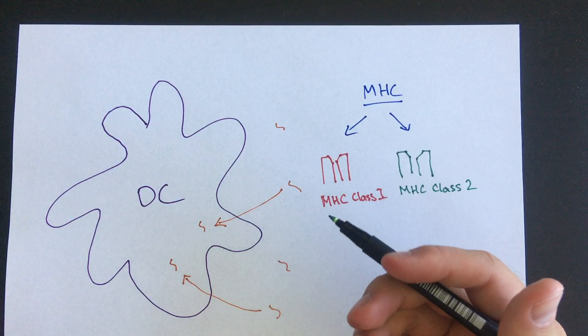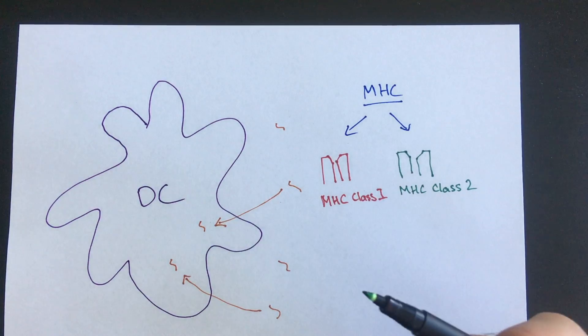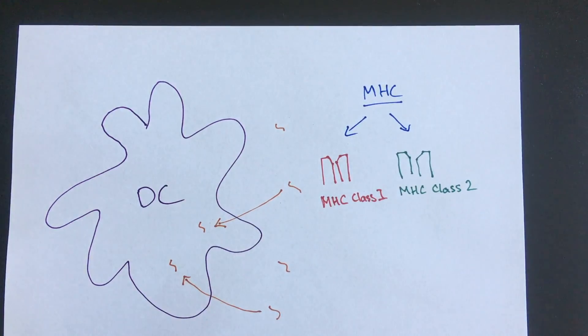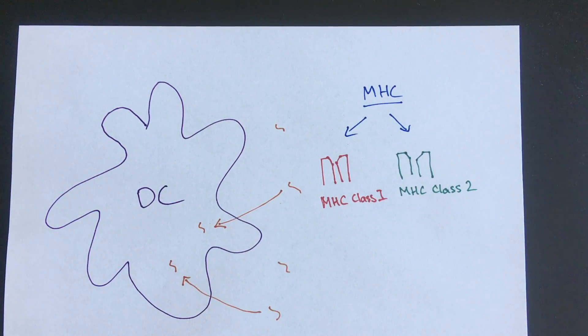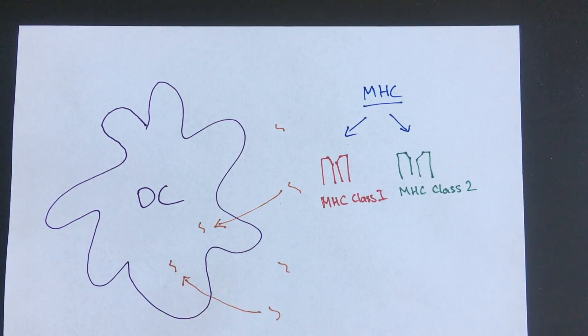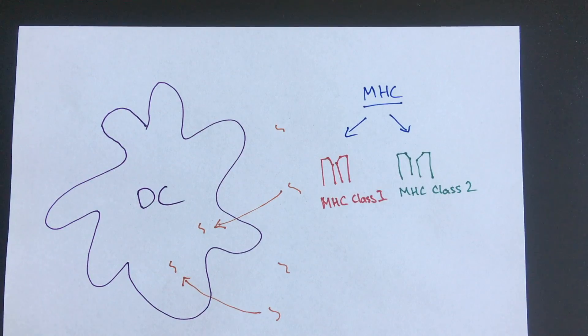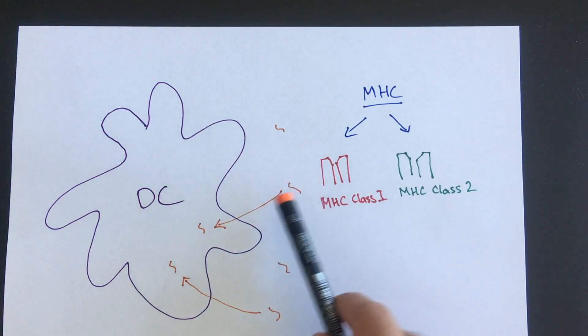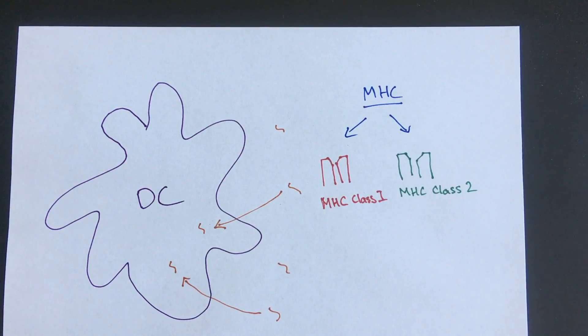MHC1 are found on all nucleated cells and present cytosolic antigens—antigens found inside the cell. MHC2 are found only on professional antigen presenting cells like this dendritic cell, but also macrophages and B cells. These present endosomal antigens—antigens that were originally extracellular but have been taken up by the cell.